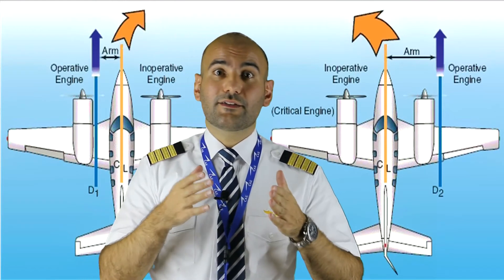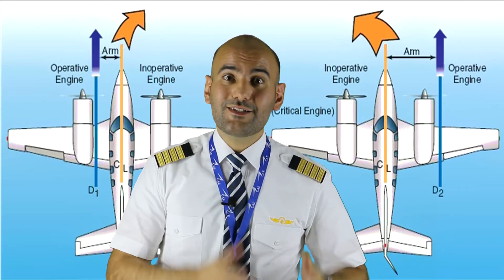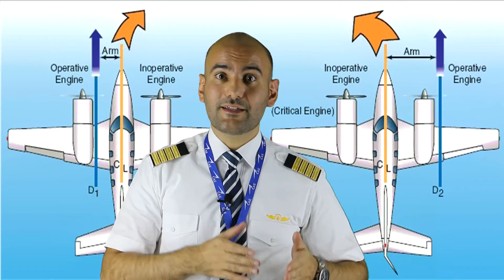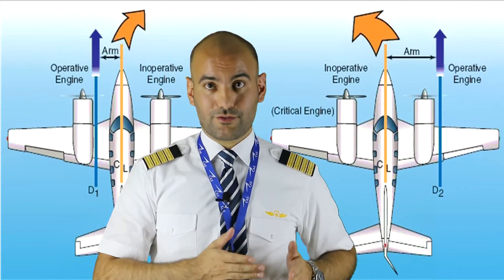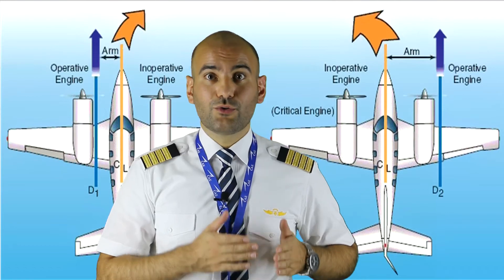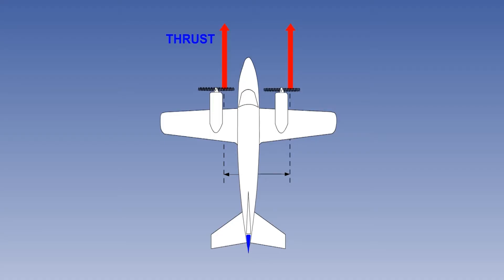This torque effect attempts to yaw the aircraft nose toward the inoperative engine — a yaw tendency which must be counterbalanced by the pilot's use of flight controls. Due to the asymmetric blade effect, also known as P-factor, the right-hand engine typically develops its resultant thrust vector at a greater lateral distance from the aircraft CG.